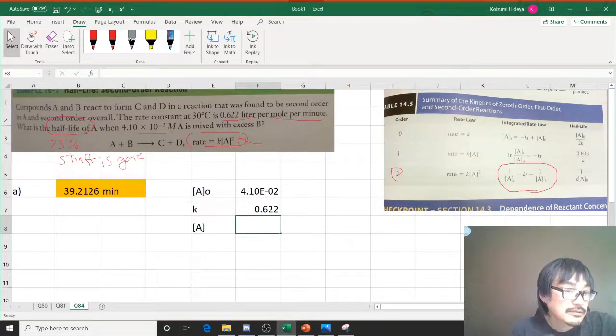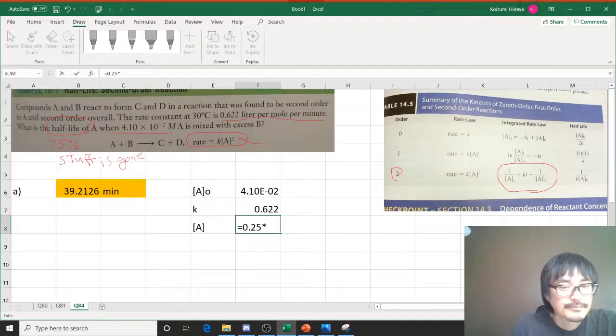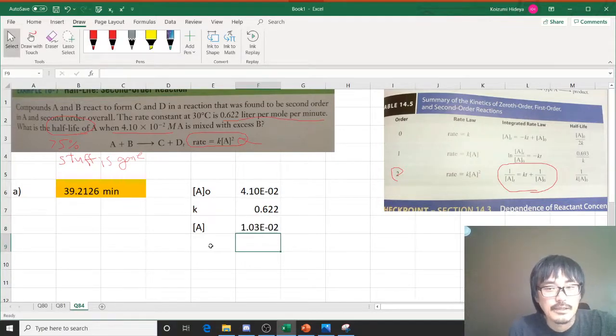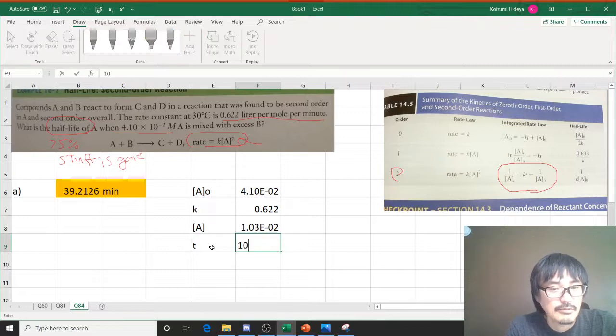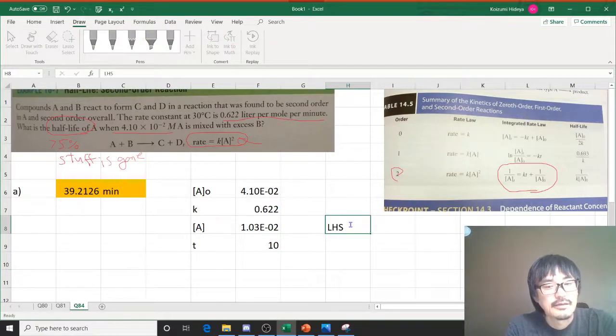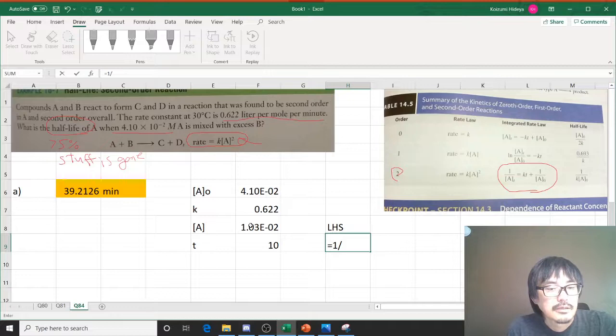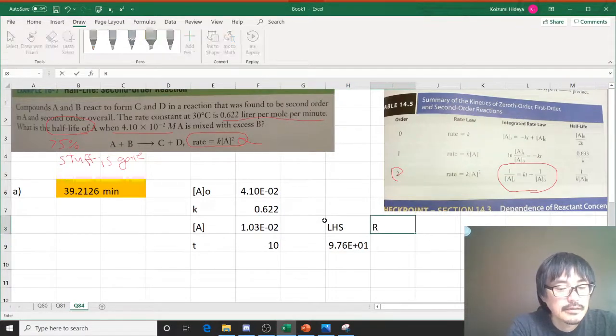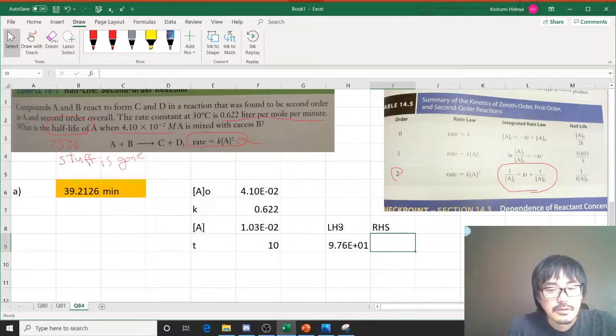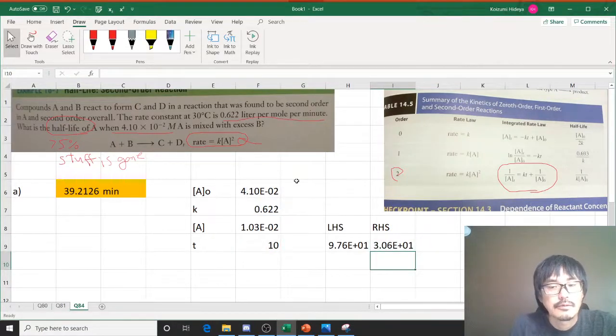Right, this current concentration, only 25% remains, right? 75% is gone, so 0.25 times. So yeah, these are gone, and t is unknown because we're solving for t. So let's just say that I'm having like 10 minutes or so, right? Then I do that left hand side, right hand side stuff. Left hand side is equal to 1 over, and then right hand side is equal to k times t plus 1 over A naught.